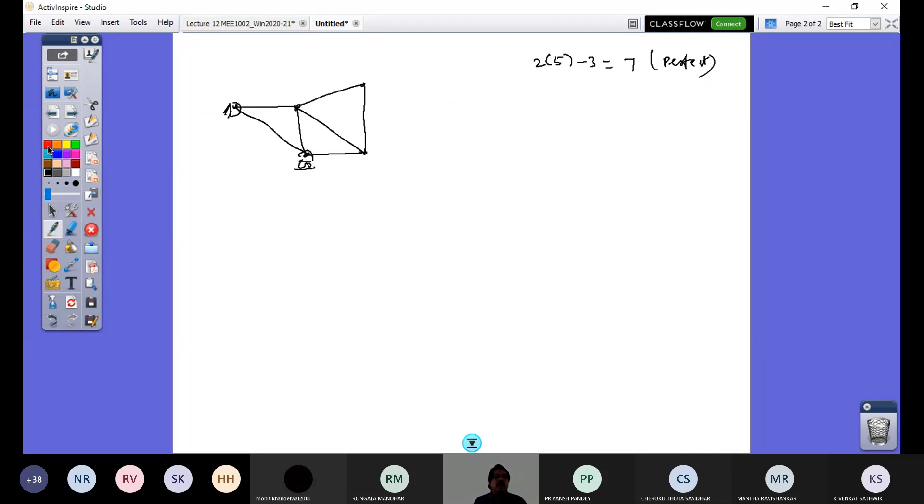So here I have a load of 10 kilonewton at this joint. If I ask you to analyze this truss now, by observation you can identify if there are any zero force members. That's very important. Correct.